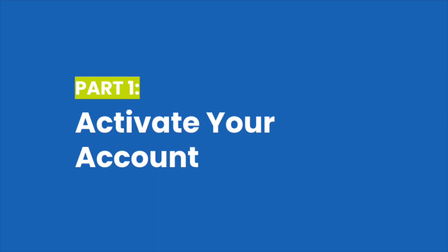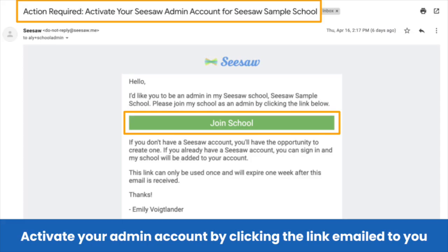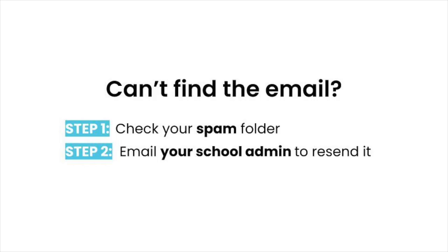Before we get started, let's make sure everyone is set up with an administrator account. You should have all received an email that looks like this. You can try searching for the subject line if you cannot find it. When you click Join School, please follow the prompts to create a password. If you have already done this, you can skip this step. If you're unable to find the email, make sure that you check your spam folder. If you're still not able to find it, please email your district tech admin to resend the invitation.